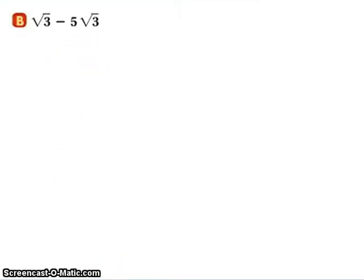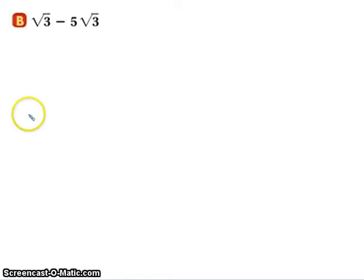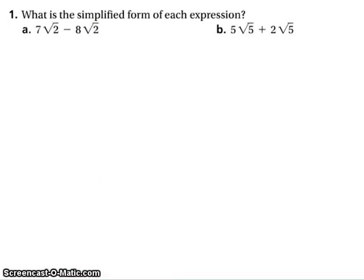Try that one. That's subtraction. So going back to this one, there's a 1 here. So we have 1 root 3 minus 5 root 3. We're talking about how many root 3s we have. Same thing with these two. Give them a try.